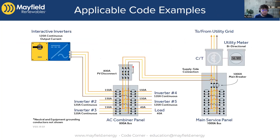This slide looks back at B33, the sum of breaker rule. Here's an example of five inverters getting combined in an AC combiner panel, with one load breaker as well. When you're sizing your bus and sizing that panel, you need to add up all those breakers including the load breaker and make sure that you are — in this case — 800 amps or less. If you are, then you're good to go. If not, you would just bump up to the next size.